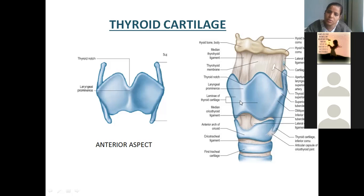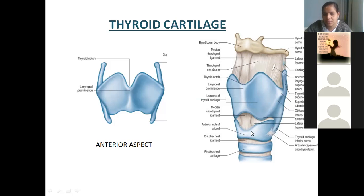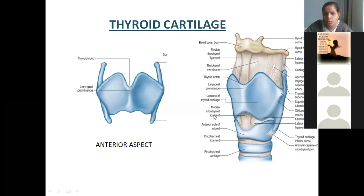Now when you come down, this is thyroid cartilage and this is cricoid cartilage. Connecting the thyroid and cricoid cartilage again you have a membrane — you call it as cricothyroid membrane. This is cricoid and this is thyroid; that's why you call it as cricothyroid membrane. Again you have a thickening in the middle — same name — you call it as median cricothyroid ligament. Laterally also you have two thickenings — you call it as lateral cricothyroid ligament. The membrane's names and the ligament's names are the same.